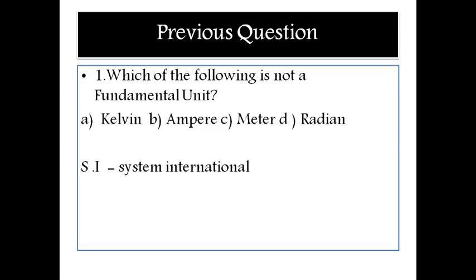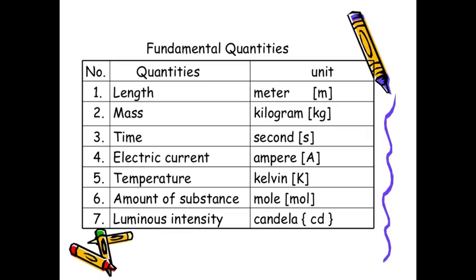There are a total of seven fundamental SI units. SI means System International — these fundamental units are accepted internationally. Wherever you go, whichever country, the same units apply. So all these units are accepted internationally.